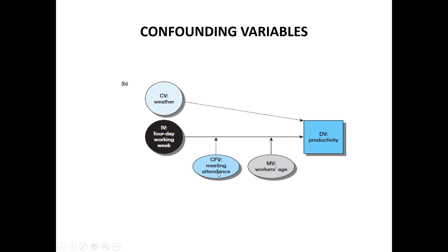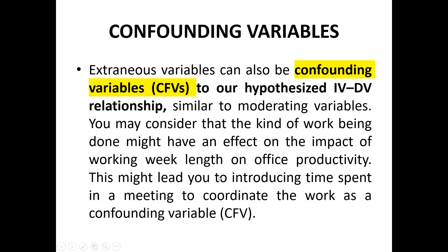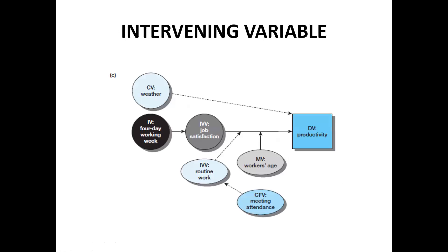So in our study, we have seen independent-dependent variable relationships, then moderating variables, then control variables — external variables which we include in the study as control variables — and also confounding variables, which are external variables included in another form. Next is the intervening variable.